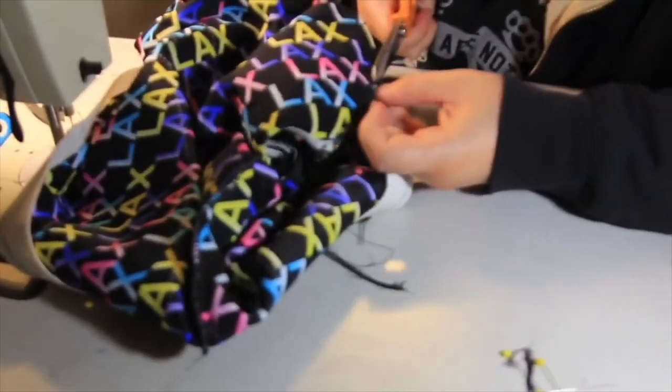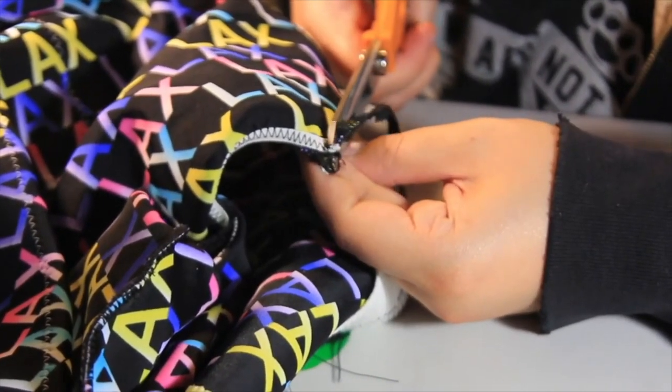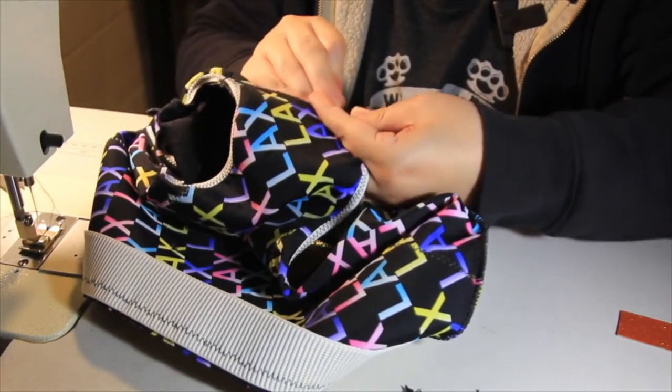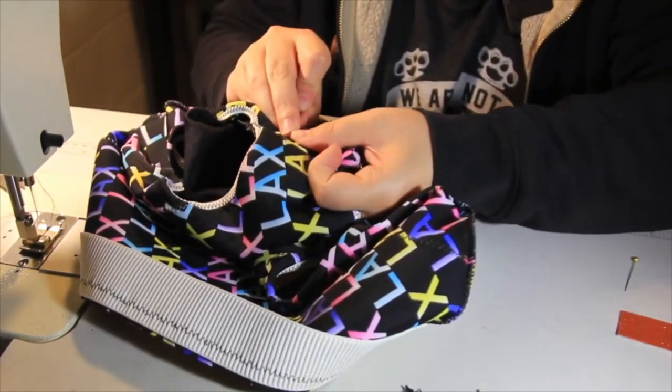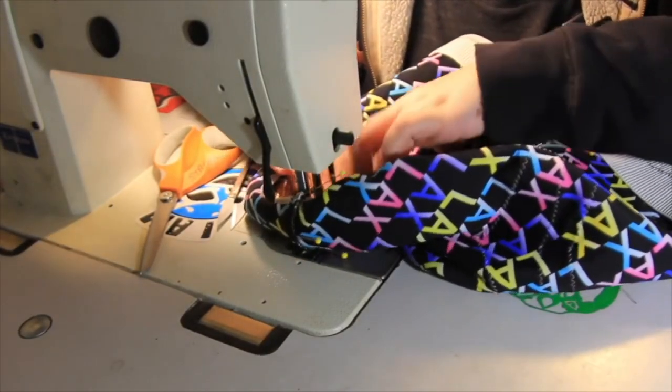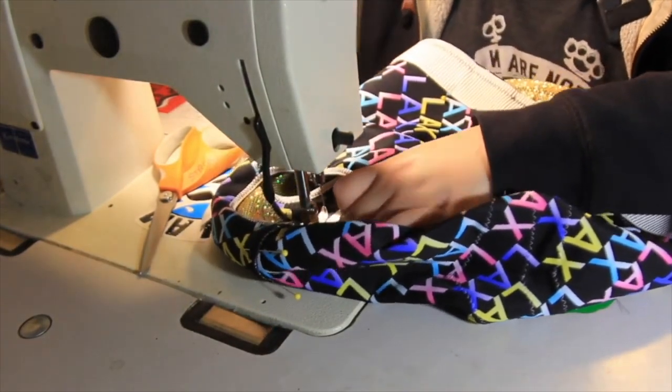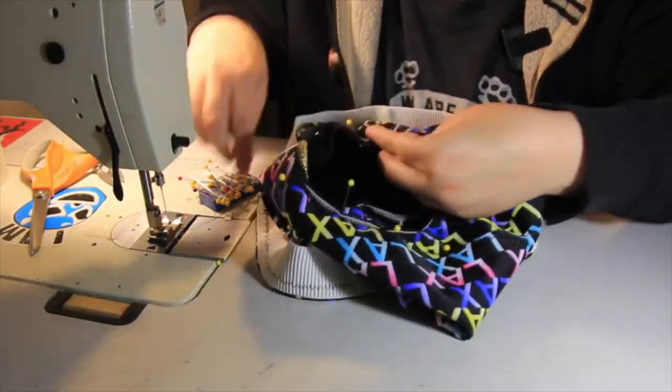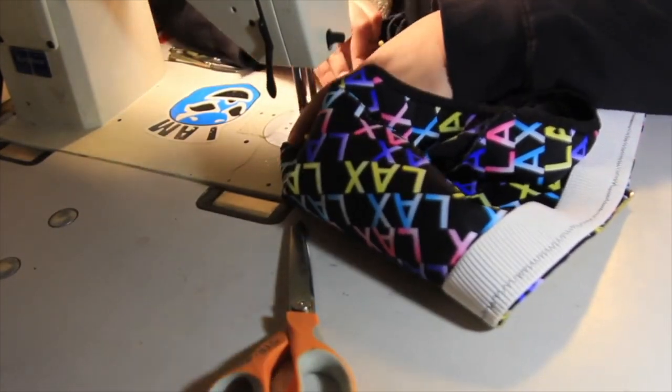Then flips and pins the hem of the leg opening, effectively enclosing the elastic she just sewed down. Once the hems are pinned, they are topstitched using the zigzag machine. Once we finish that, we flip and pin the leg openings. And of course, follow that up with some more stitching.